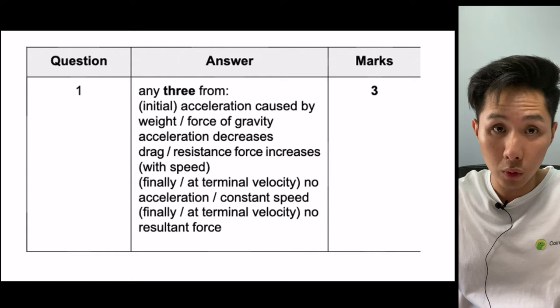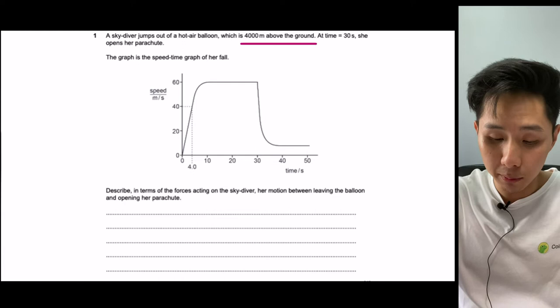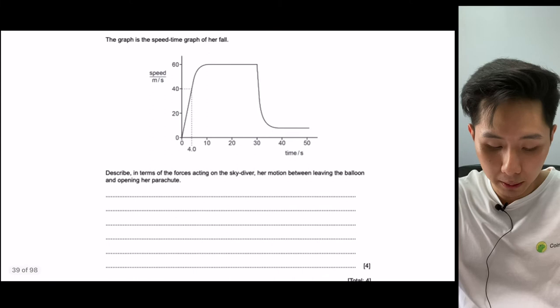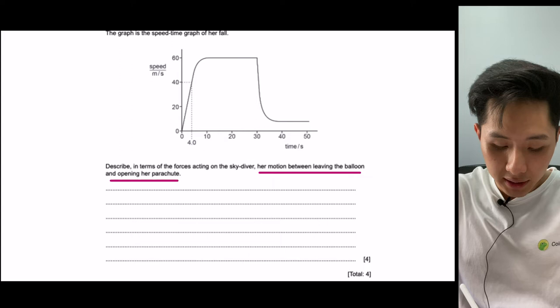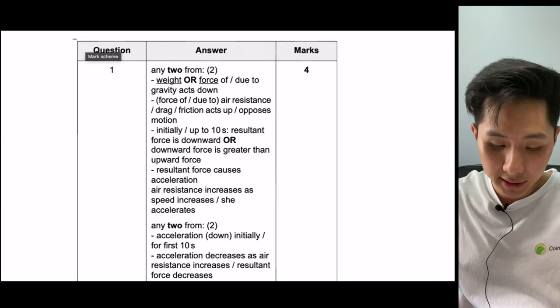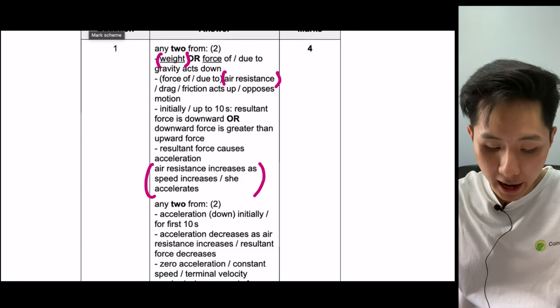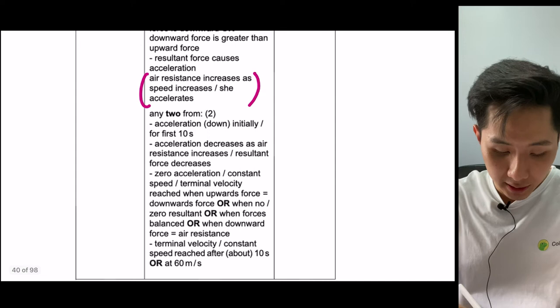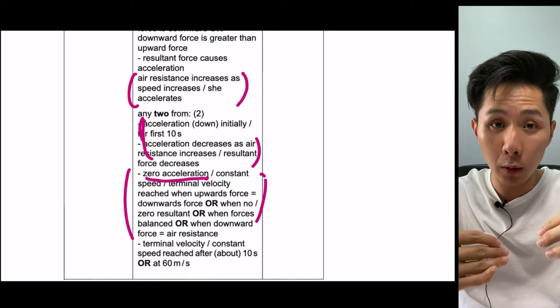Another skydiver example: the skydiver is 4,000 metres above the ground and opens her parachute at time 30 seconds. We need to describe forces acting between leaving the balloon and opening the parachute. The weight is mentioned, and there's air resistance. As the skydiver's speed increases, air resistance also increases, reducing acceleration. Until the point where acceleration is zero, when weight equals air resistance — that's terminal velocity. This guide helps you answer to get full marks.